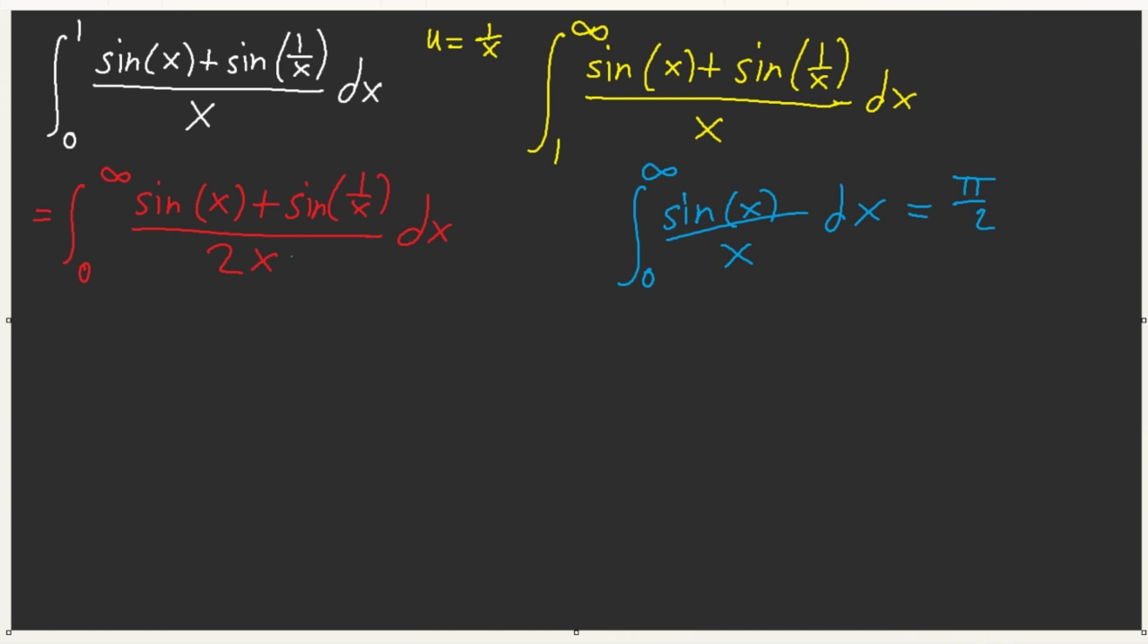Right? We know this is equal to pi over 2 times a half. That's what? Pi over 4. Right? Then what is this? What is this? From 0 to infinity, sin of 1 over x over x dx. Right? We'll let u equal 1 over x. Then we get pi over 4 plus a half, 0 to infinity. Now here, this becomes sin of x. The x squared neutralizes it back to x. This is also pi over 2, pi over 4. So in general, our answer is just pi over 2. So this integral here is pi over 2.